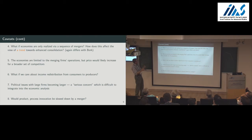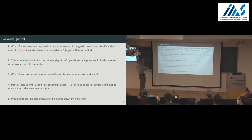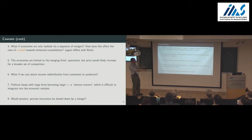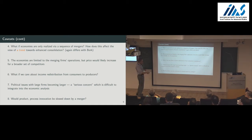Other issues he raises: the efficiencies might be limited to the operations of the two merging firms, but prices might go up for all firms because of prices being strategic complements. What if we care about income redistribution from consumers to producers? Even if total welfare is not hurt by the merger, there might be some transfer from consumers to producers. Political issues with large firms becoming larger — he sees that as a serious concern, which is difficult to integrate into the economic analysis. And would product and process innovation be slowed down by a merger?